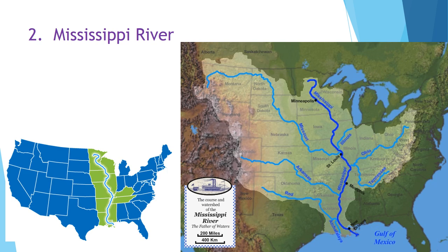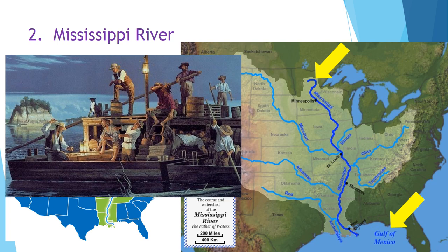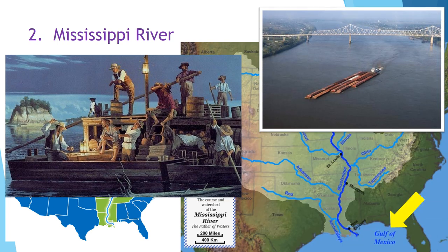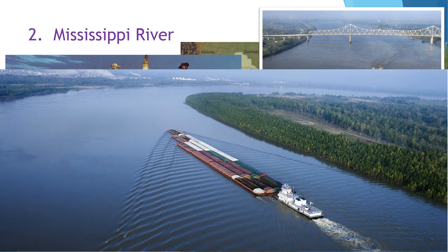The Mississippi River starts in Minnesota and flows south for 2,320 miles until it drains into the Gulf of Mexico. This river is known for its use in trade because barges have shipped products up and down the river for over 200 years. Even today, commercial barge traffic is a common sight along this mighty river.